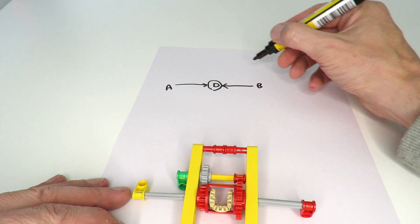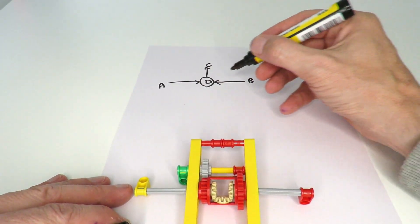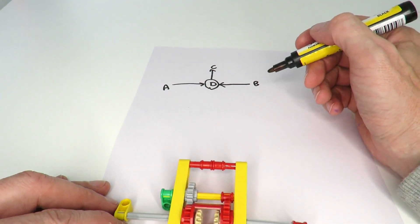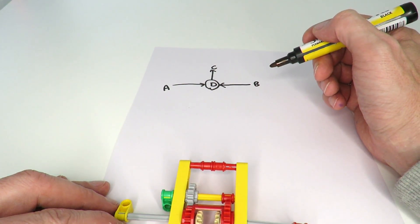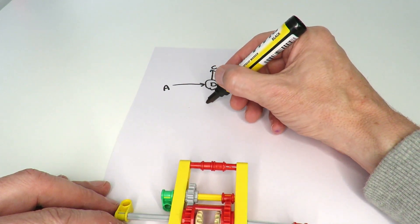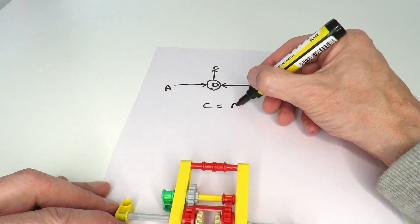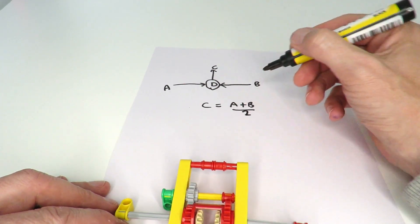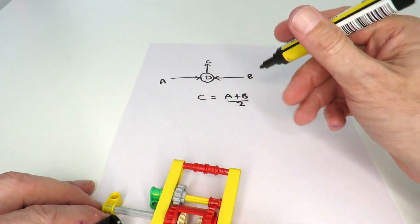It turns out that the relationship between A, B, and C is simply that the output C is the average of the speeds of A and B. So we can write that C is equal to A plus B divided by 2. That's just simply the average of A and B.